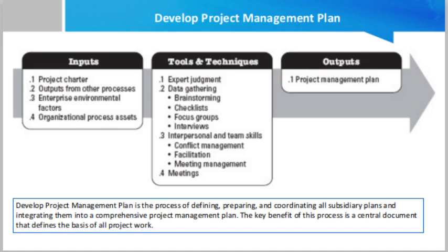Organizational process assets are resources, procedures, or processes from any or all of the organizations involved in the project that influence the process or outcome. Plans, policies, procedures, and guidelines may be used to develop the project management plan — for example, the process of installing new equipment in the data center. Enterprise environmental factors occur within and outside an organization and may affect the project outcome; factors such as company culture and market conditions may be used to develop the project management plan.